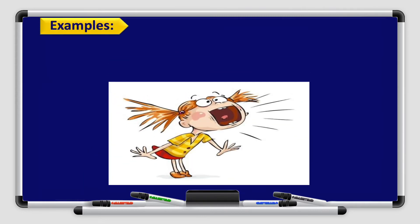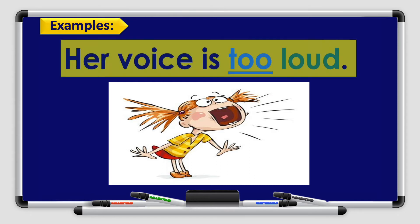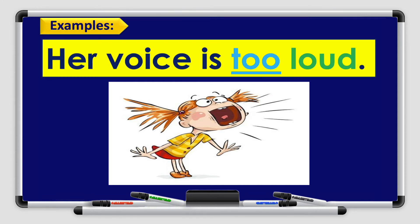Alright boys and girls, take a look at this picture. Try to think of this girl and use the word 'too' plus an adjective. Her voice is too loud. 'Her voice' is the subject, 'is' is the verb, 'too' is the word we should use, and 'loud' is the adjective. So her voice is too loud — she is shouting.